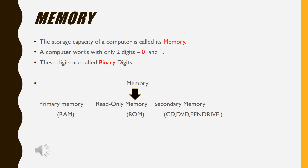The storage capacity of the computer is called its memory. A computer works with only two digits — that means the computer uses only zero and one. These digits are called binary digits. When we studied about memory, we also studied about RAM, ROM, and secondary memory.